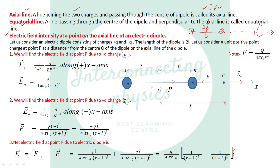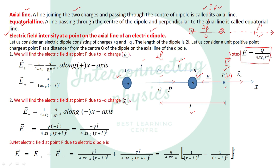Case one: electric field intensity at a point on the axial line of the electric dipole. Consider an electric dipole with minus Q and plus Q charge separated by distance 2L, with half-length L on each side. Let point P be on the axial line at distance r from the center of the dipole. We place a unit positive test charge at P and use the formula E = Q / (4πε₀r²) for the electric field due to a point charge.